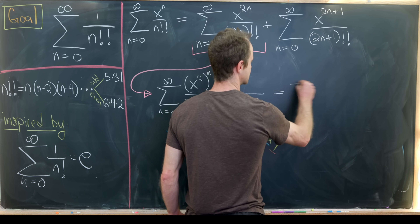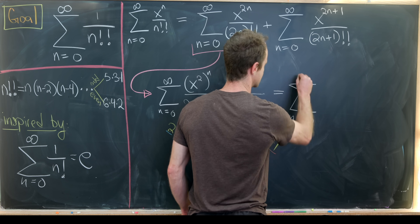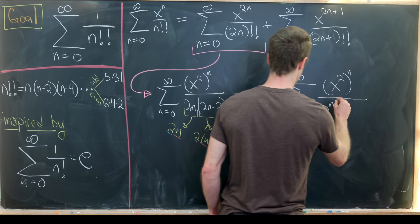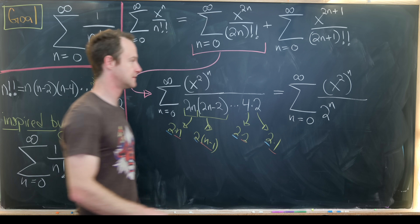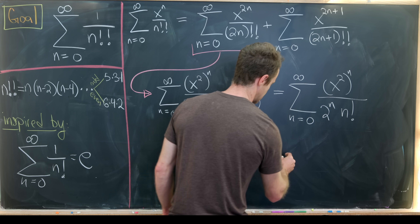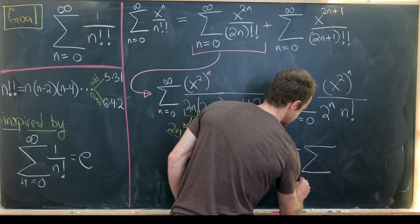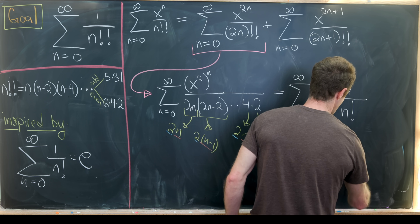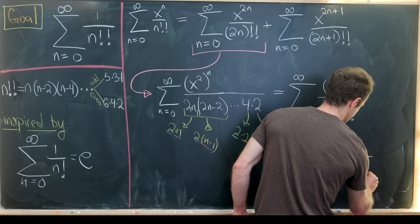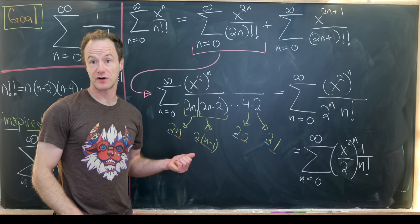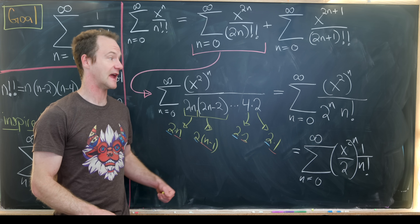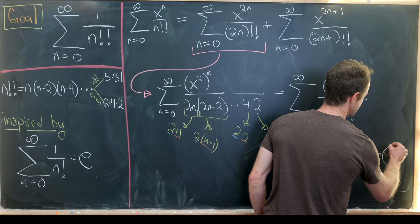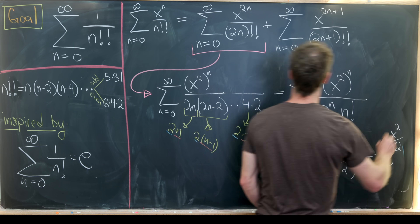After rewriting, we have the sum as n goes from 0 to infinity of x squared to the n, over 2 to the n times n factorial. We can rewrite this as the sum of x squared over 2, all to the n, times 1 over n factorial. That should look pretty similar to the power series expansion of the exponential function, and indeed this is equal to e to the x squared over 2.